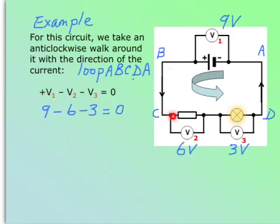And then the next one we go through is this one here. We will lose energy, so it's minus V2, and then through this one also, minus V3, and then back to here. So equal to zero. And clearly, 9 volts minus 6 volts minus 3 volts is equal to zero.